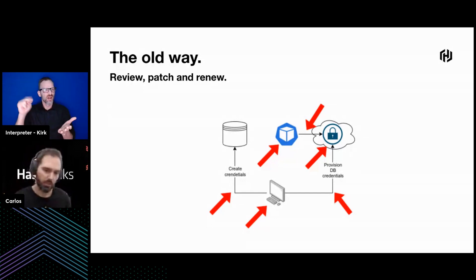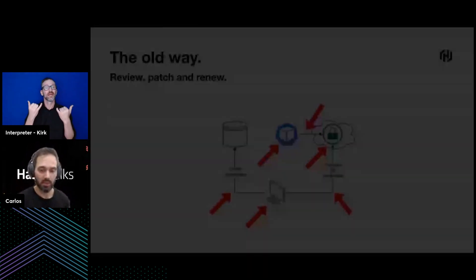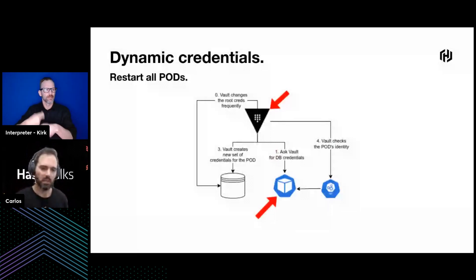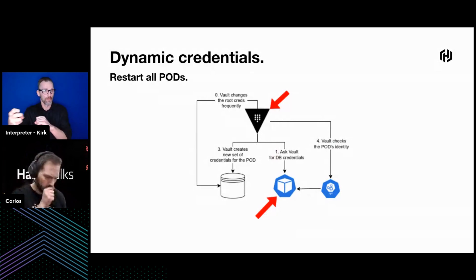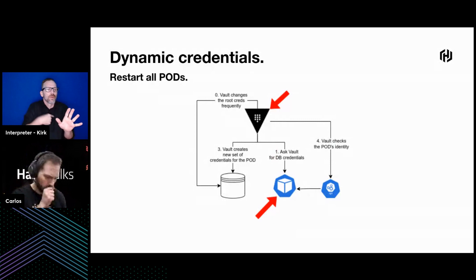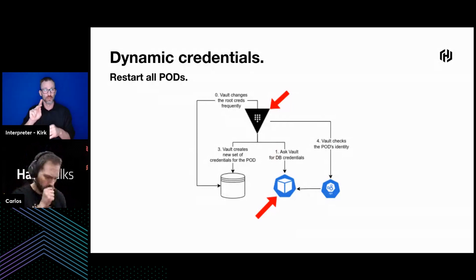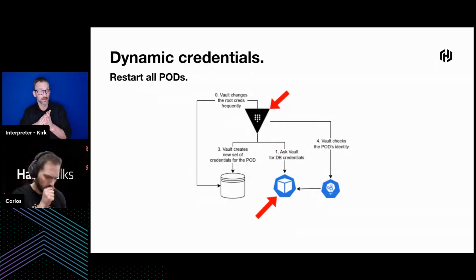Thanks to Vault and dynamic credentials, the only step you have to do is first identify whether you've been taken over through Vault or your application. The full path is very very hard to be taken over. Vault policies are very fine-grained, and thanks to using the Kubernetes authentication method for Vault, it means Vault is going to ask the Kubernetes cluster if whoever is requesting credentials is actually running inside that cluster.